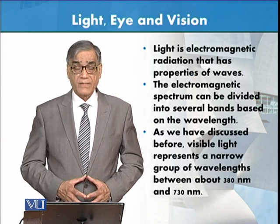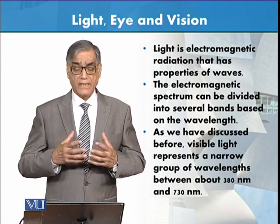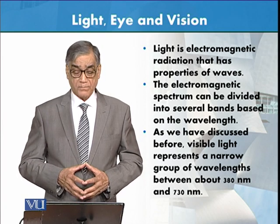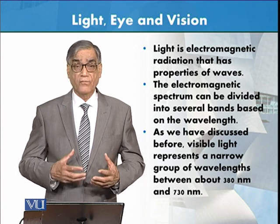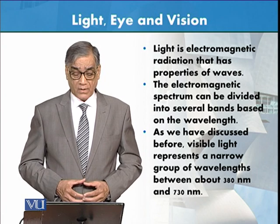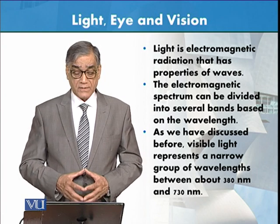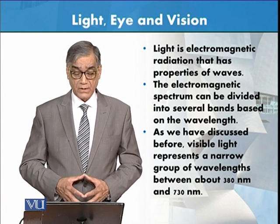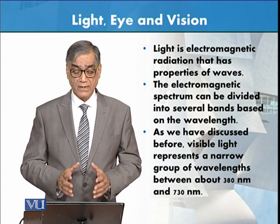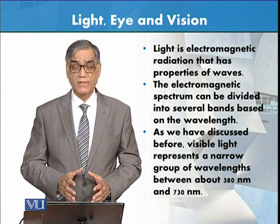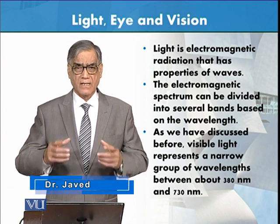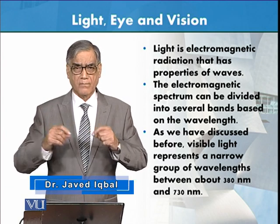What is light? Light is electromagnetic radiation that has the properties of waves. The electromagnetic spectrum can be divided into several bands which are based on these wavelengths. You are familiar with this.